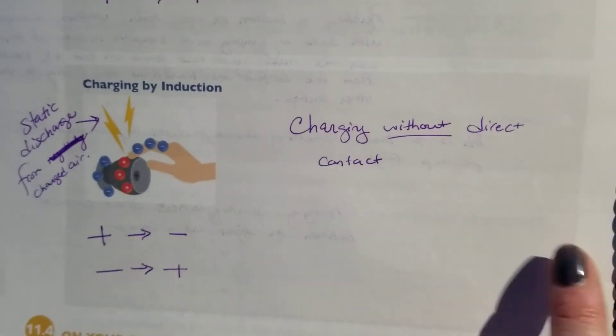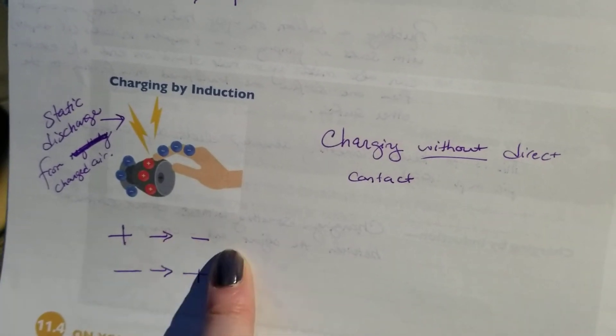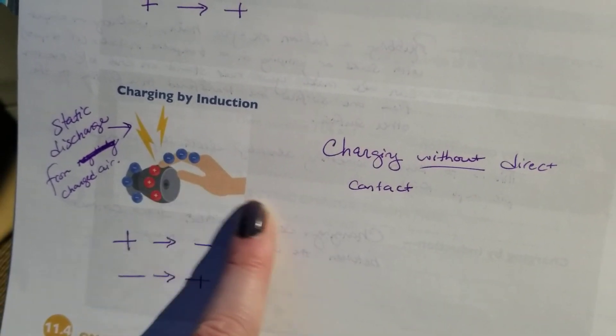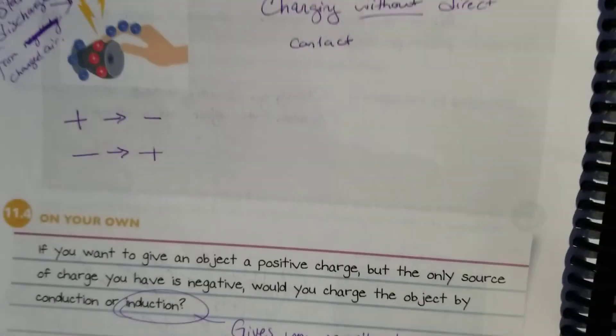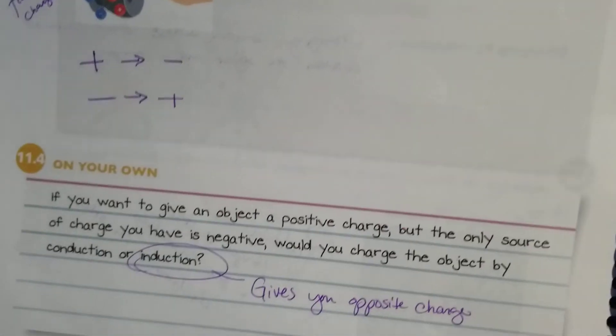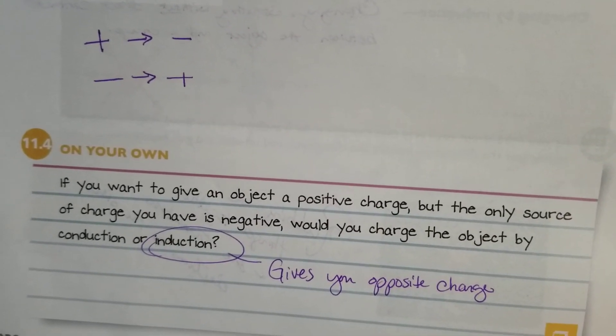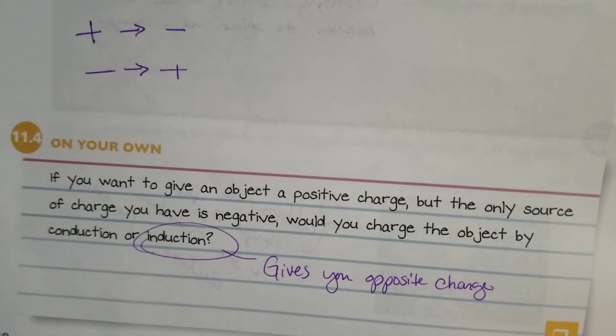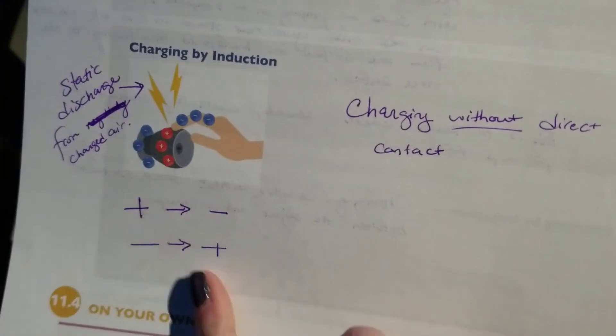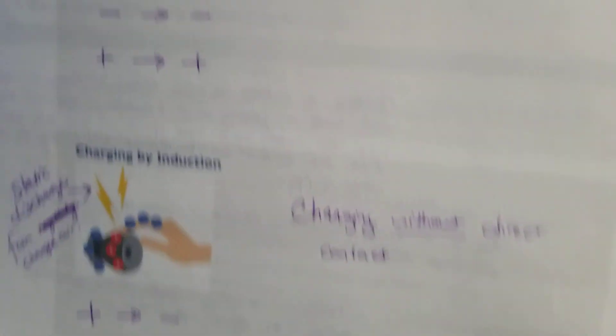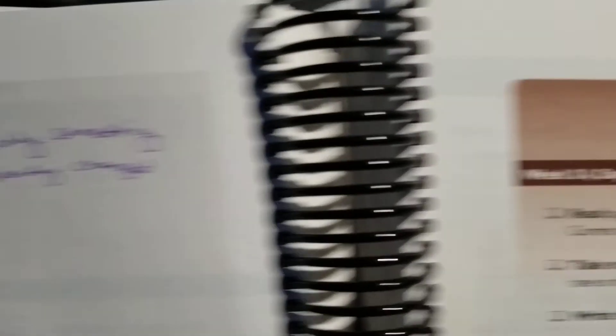Induction is charging without direct contact, but it's also changing the charge from positive to negative. It's transferring opposite charges there. If you want to give an object a positive charge with the only source of charge you have is negative, would you charge it by conduction or induction? Well, you want the opposite. You better use induction. This is the induction changes the charge. Conduction does not change the charge.